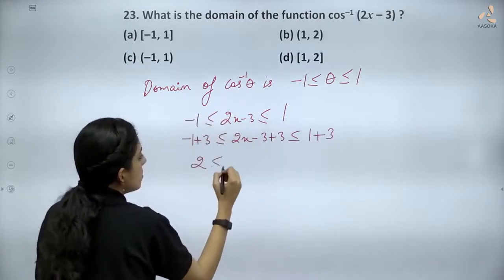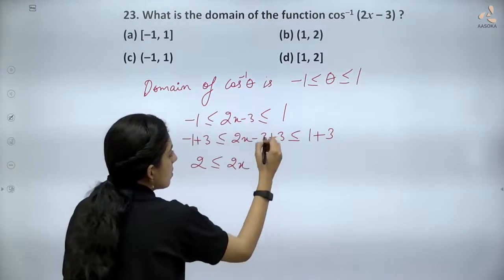So you will get 2 less than equal to 2x less than equal to 4. The minus 3 and plus 3 cancel out.